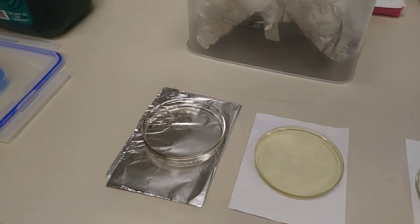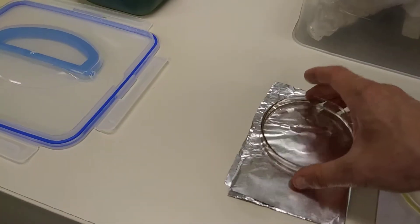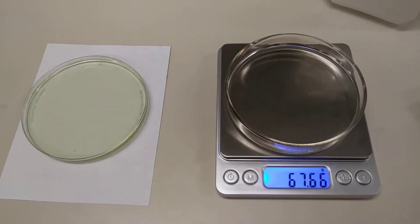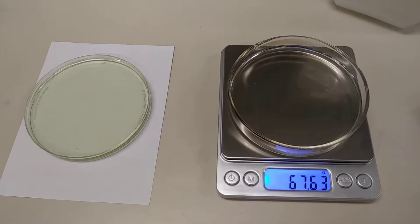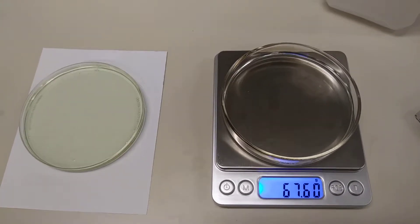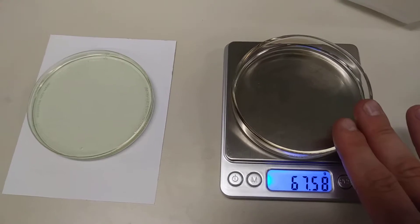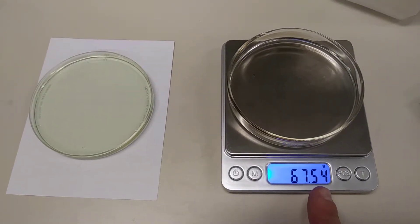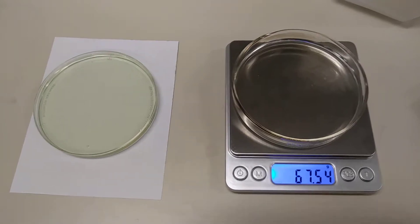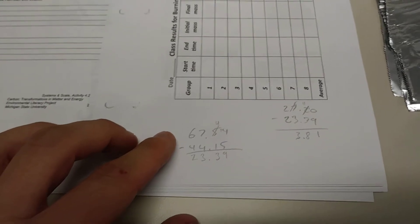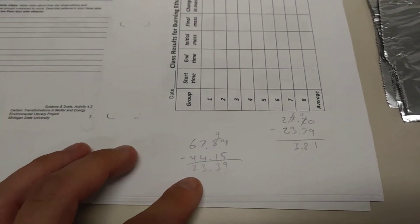Now we're going to take our dish and we're going to weigh it. All right, 67.66. Now you have to understand what this means. The scale shut off, and it is not accounting for taring the dish. So the mass of the ethanol here is actually this number, 67.54 minus 44.15. I subtracted the mass of the dish to get 23.39 grams. So that's the mass of the current amount of ethanol in the dish.